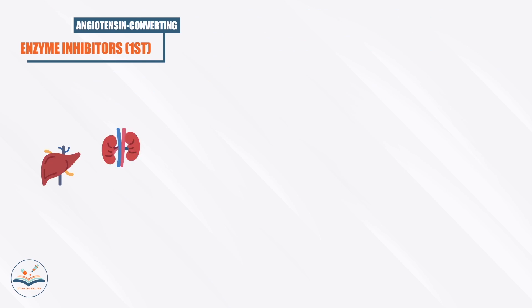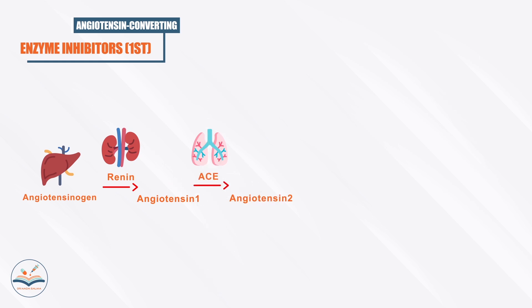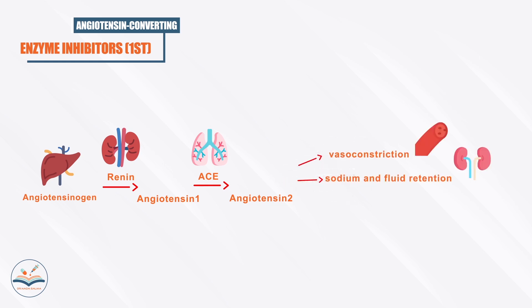The liver secretes angiotensinogen. Angiotensinogen is converted to angiotensin I by renin, which is secreted by the kidneys. Angiotensin I is then converted to angiotensin II by angiotensin converting enzyme. Finally, angiotensin II causes vasoconstriction, sodium and fluid retention in the kidneys, and aldosterone secretion in adrenal and extra-adrenal tissue, causing sodium and water retention.